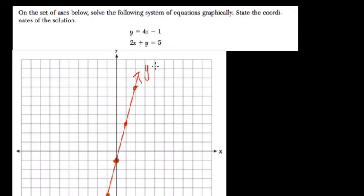Okay. Then label it, y equals 4x minus 1. Usually you label on the line as well.